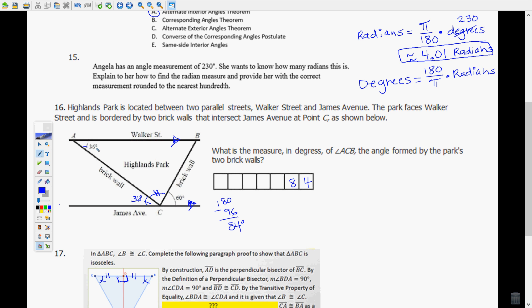So we have alternate interior angles congruent when lines are parallel. So this angle is 36, its alternate interior angle is also 36 degrees. So now James Avenue being a straight line 180 degrees, you add 60 plus 36, get 96, subtract from 180 to get that angle that you're looking for is 84 degrees. So the measure of angle ACB is 84 degrees.